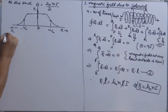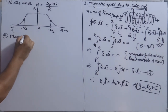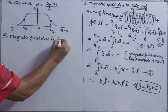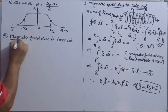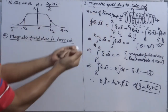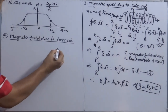The fourth application is the magnetic field due to a toroid. A toroid is a long solenoid bent round in the form of a closed circular ring. You take a solenoid and bend it into a circular form, joining the two ends.